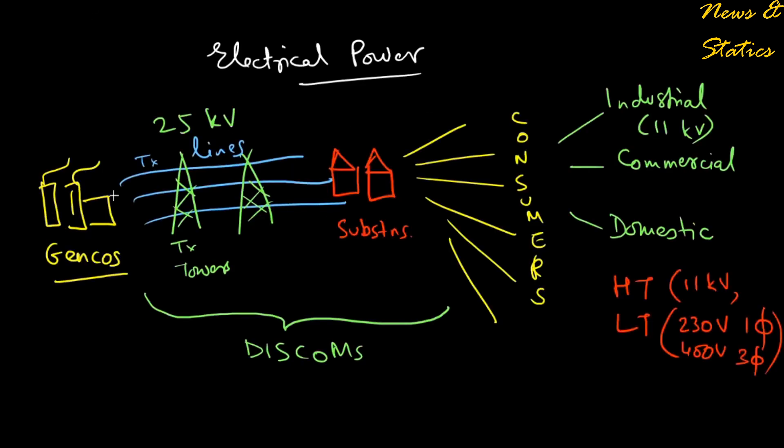Let's understand the flow chart. It's first generated in the GenCos, the generation companies like NTPC and thermal power plants. Then it goes via transmission lines through transmission towers and substations. The companies which actually do this task are known as DISCOMs, the distribution companies.